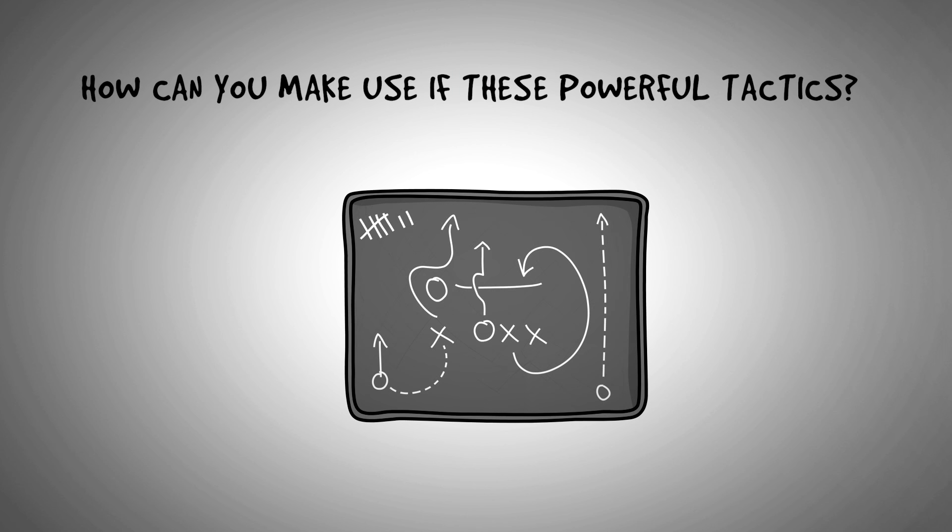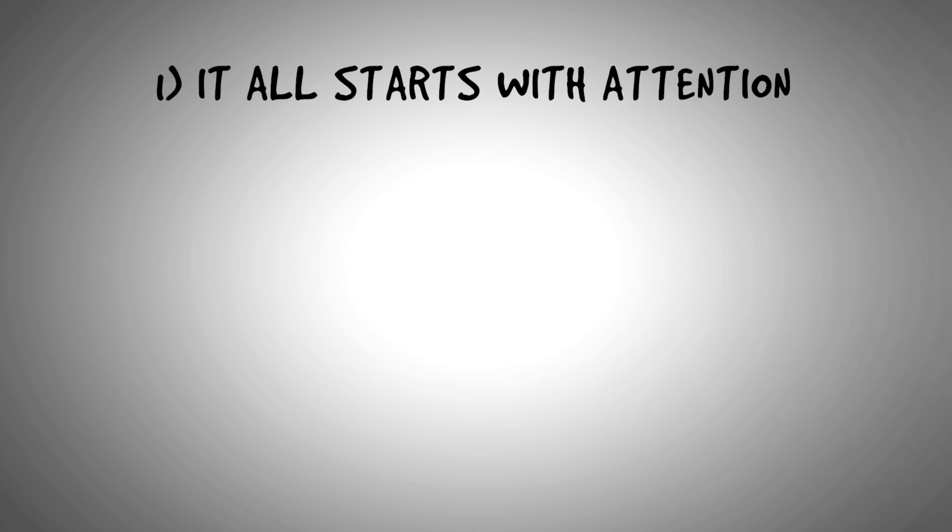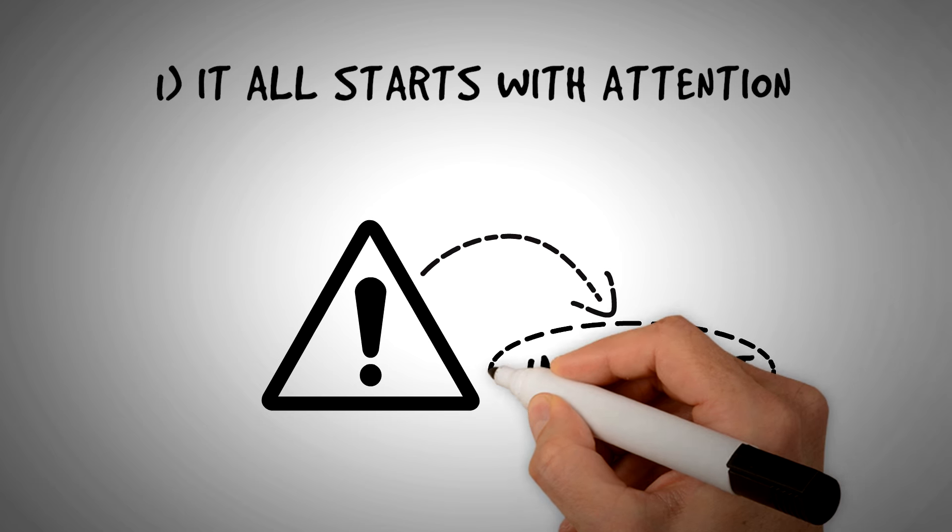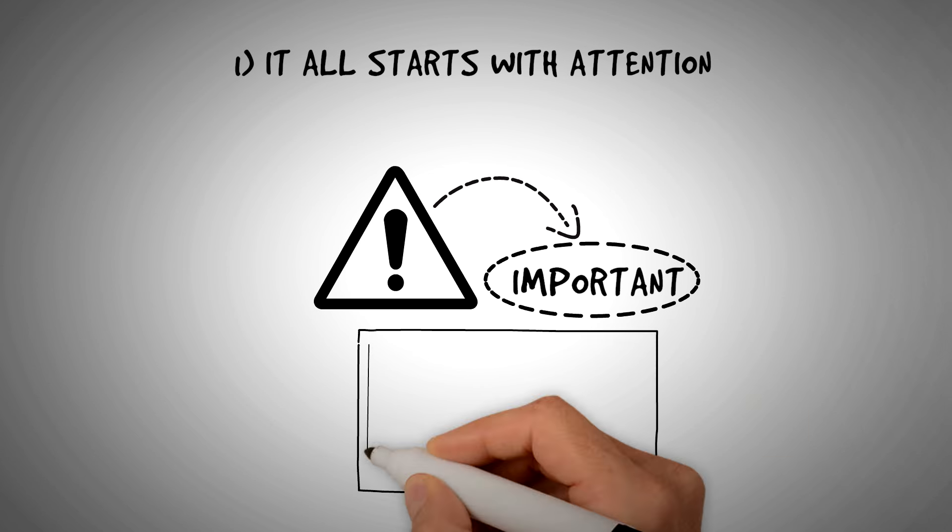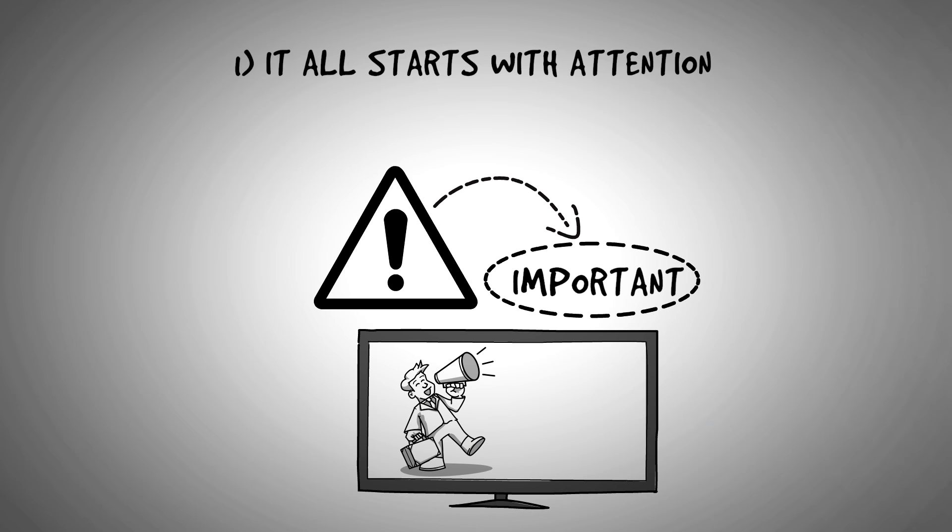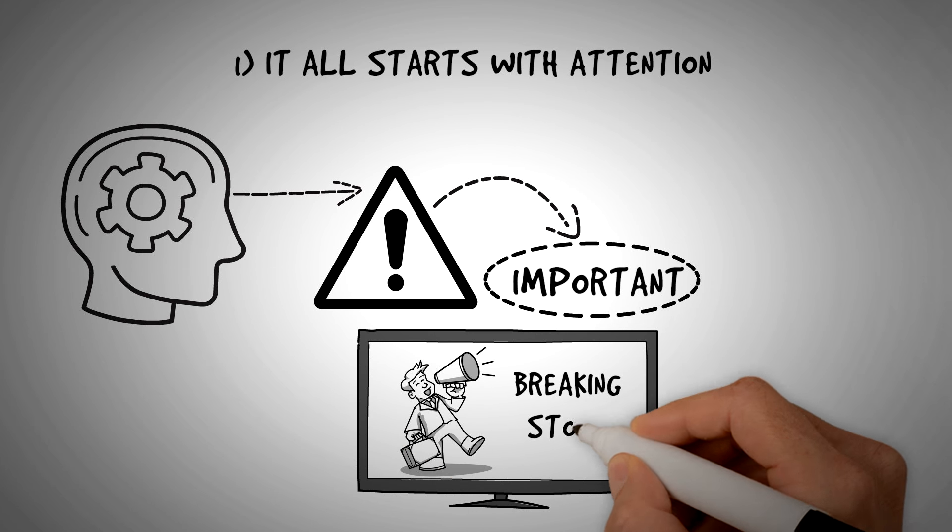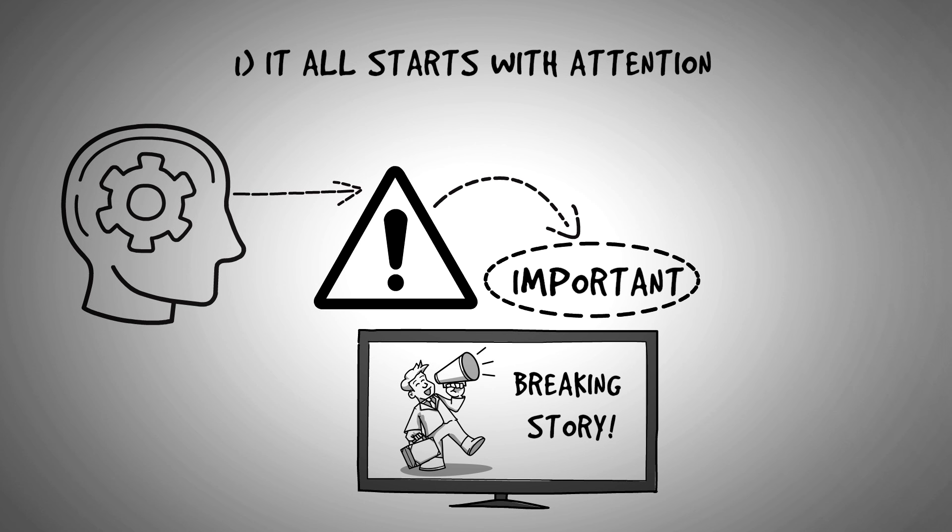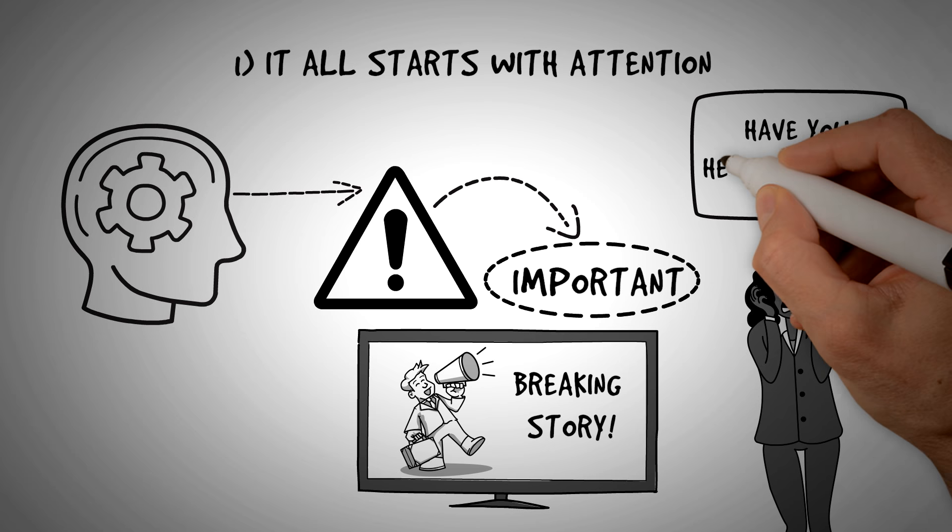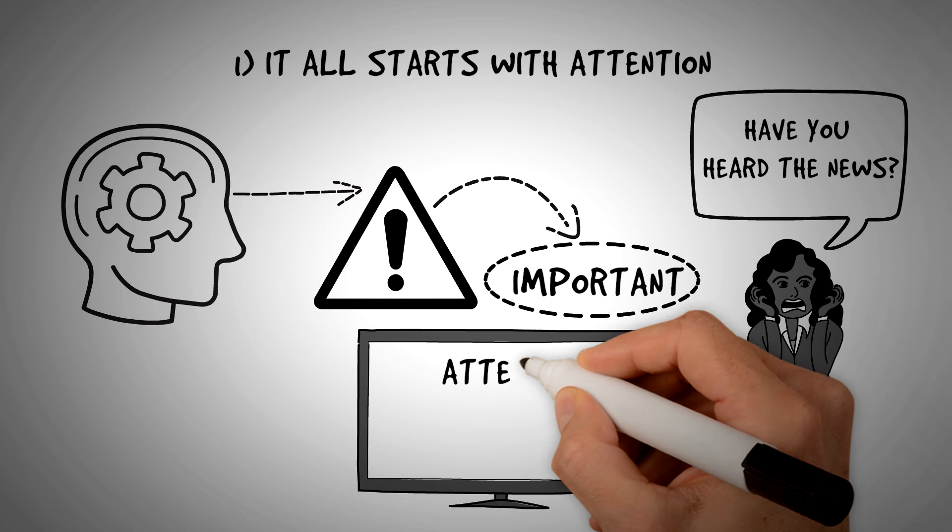How can you make use of these powerful tactics? It all starts with attention. When you pay attention to something, it will automatically become more important to you, or at least it will seem that way. And mainstream media take full advantage of this on a daily basis. Experts believe that the media does not actually change people's mind directly. But what they can do is change what story or issue gets the most attention. They control what is being talked about. And when something or someone gets covered a lot, people assume it's important. And the lesson here is attention equals importance.